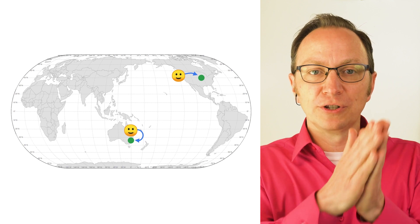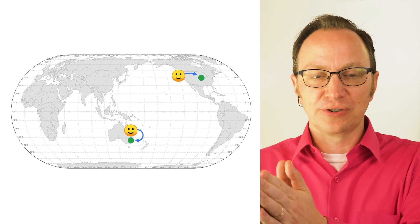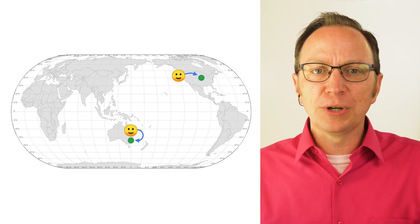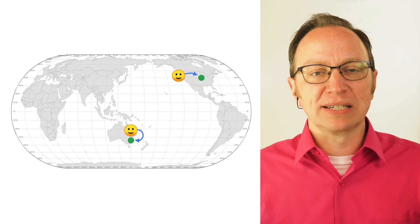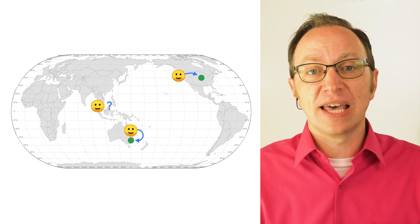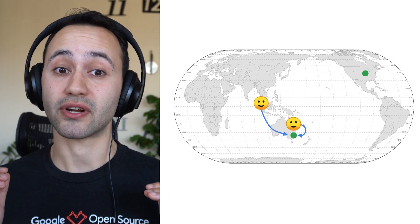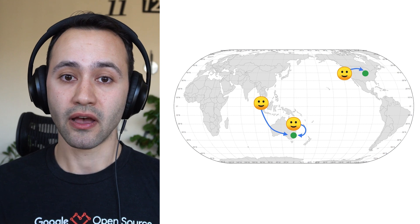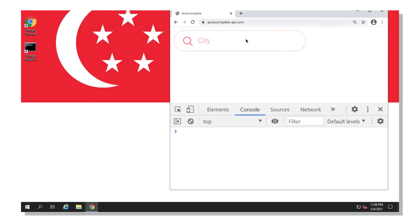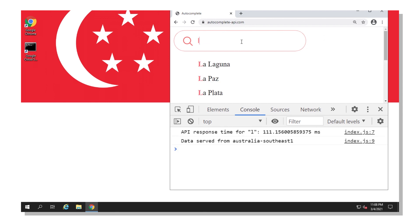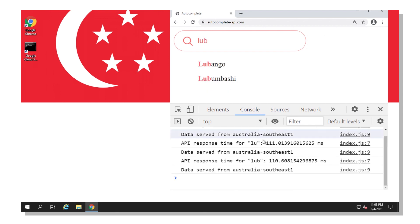So my current deployment is working well for users in the US and in Australia right now. But what happens if a user is in another place — let's say Singapore? I haven't deployed my Cloud Run service there. Google's load balancer is smart enough to route them to the closest Cloud Run service you have deployed behind the load balancer. I set up a virtual machine in Singapore. Opening the web page — it looks like they get just over 100 milliseconds response time. And here we can see the data was served from the Cloud Run service in Sydney.